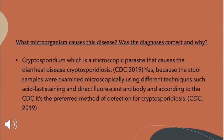The question asks what microorganism caused this disease and whether the diagnosis was correct and why. The microorganism that caused this disease was Cryptosporidium, which is a microscopic parasite that causes the diarrheal disease cryptosporidiosis. Yes, the diagnosis was correct because the stool samples were examined microscopically using different techniques such as acid-fast staining and direct fluorescent antibody, which according to the CDC is its preferred method of detection for cryptosporidiosis.